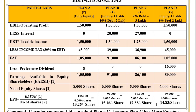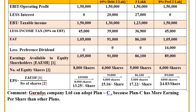My dear students, when EPS is more, that plan should be suggested to the financial manager. In this problem, Plan A has EPS of Rs. 13.25, Plan B is Rs. 15.16, Plan C is Rs. 17.22, and Plan D is Rs. 14.83. Plan C has the highest EPS among all financial plans. Therefore, you should suggest that Plan C must be adopted by Gurudas Company Limited, because Plan C has more earnings per share than the other plans.